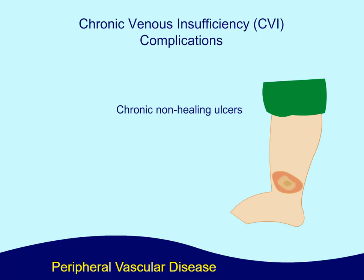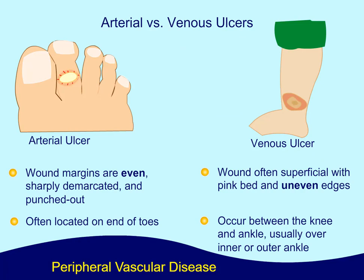Complications include chronic, non-healing ulcers. Now let's compare arterial versus venous ulcers. With arterial ulcers, the wound margins are even, sharply demarcated, and punched out, and they are often located on the ends of toes. With venous ulcers, the wound is often superficial with a pink bed and uneven edges, and they occur between the knee and ankle, usually over the inner or outer ankle.